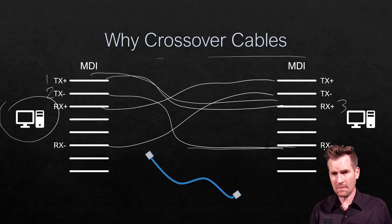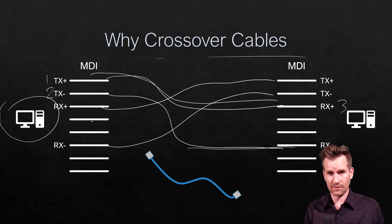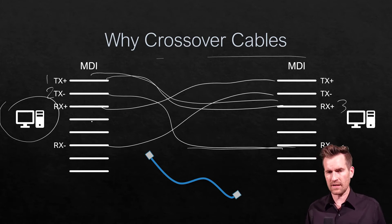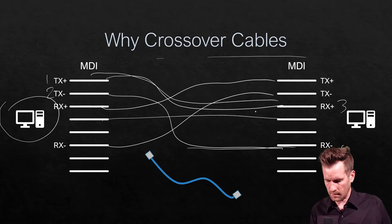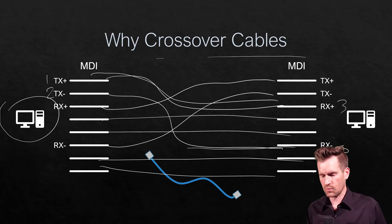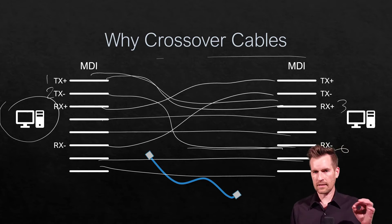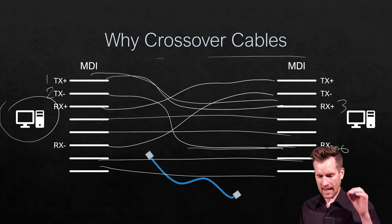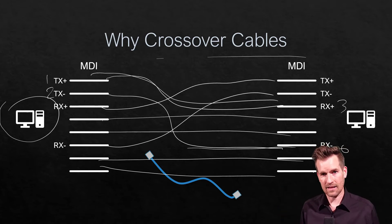Typically with crossover cables, there are a couple of different types. With our T568A and T568B crossover cables, the remaining lines are all straight-through from there. This applies when connecting MDI to MDI equipment.